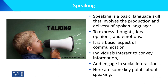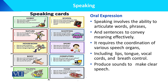Individuals interact to convey information. Some of the points of speaking, or some of the strategies that we will study in detail: the first is oral expression. Speaking involves the ability to articulate words, sounds, phrases, and sentences to convey meaning effectively. It requires the coordination of various speech organs.